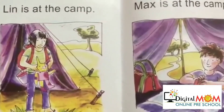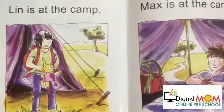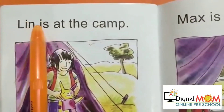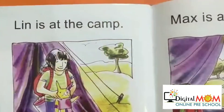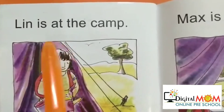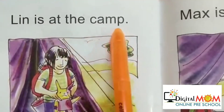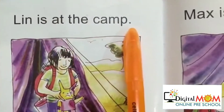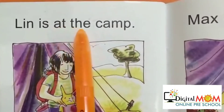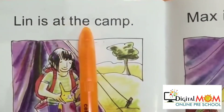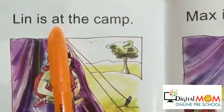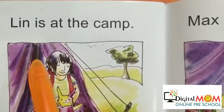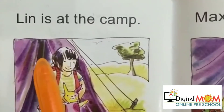Can you see this page? Here is a sentence: Lynn is at the camp. But you won't be able to read the sentence because you are not aware of these sight words like 'the', 'at', 'is'. And do you know what are sight words?